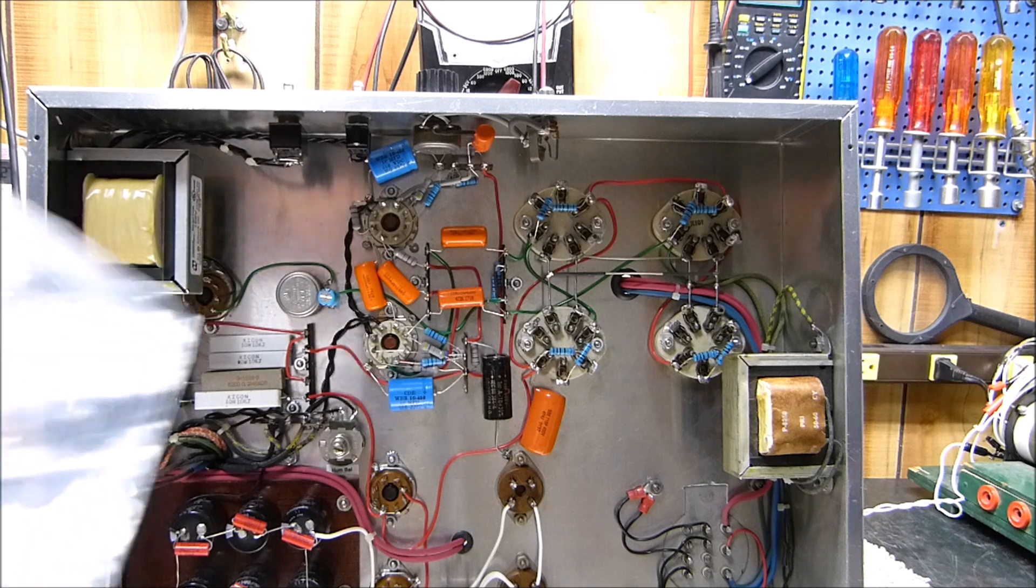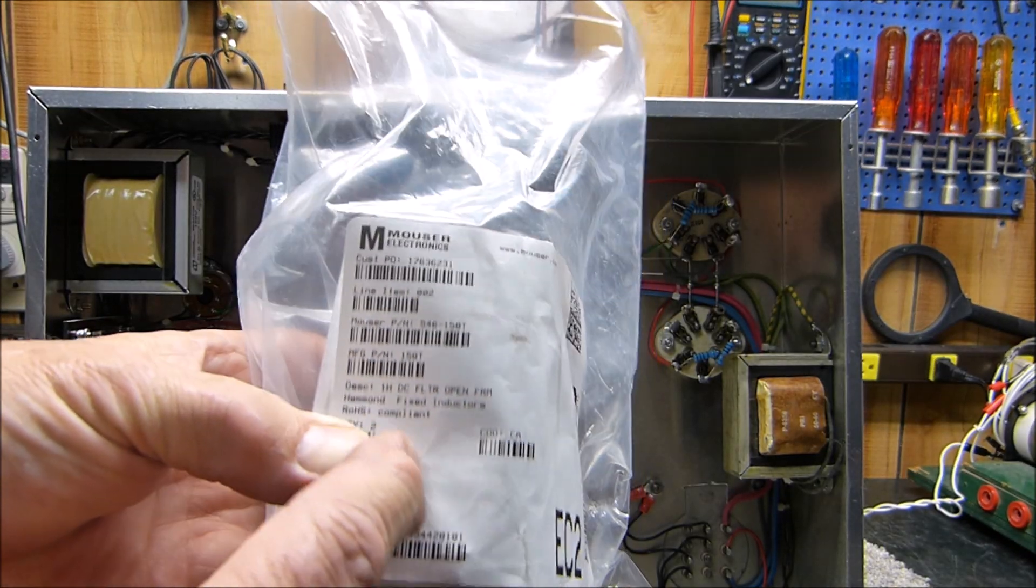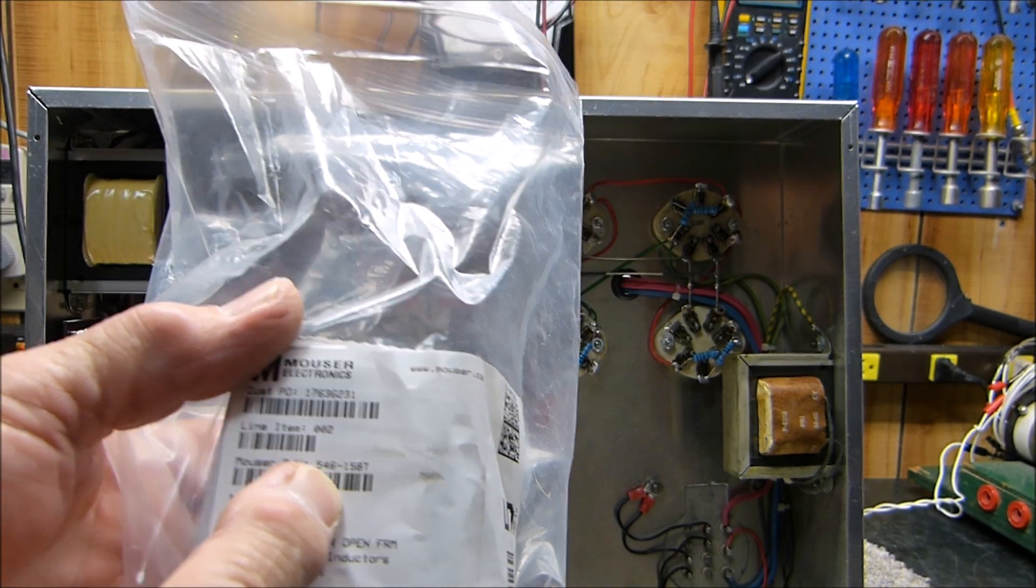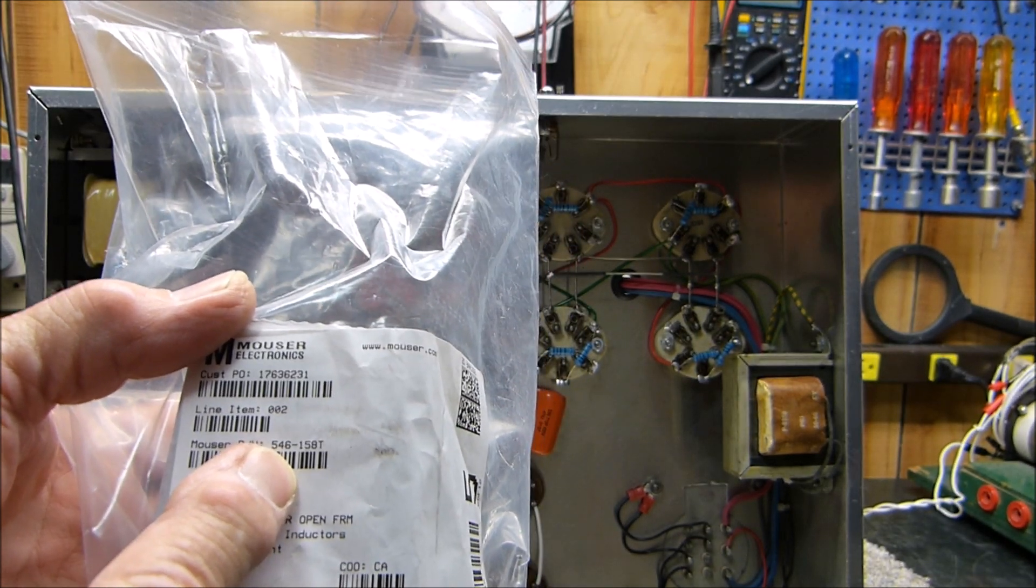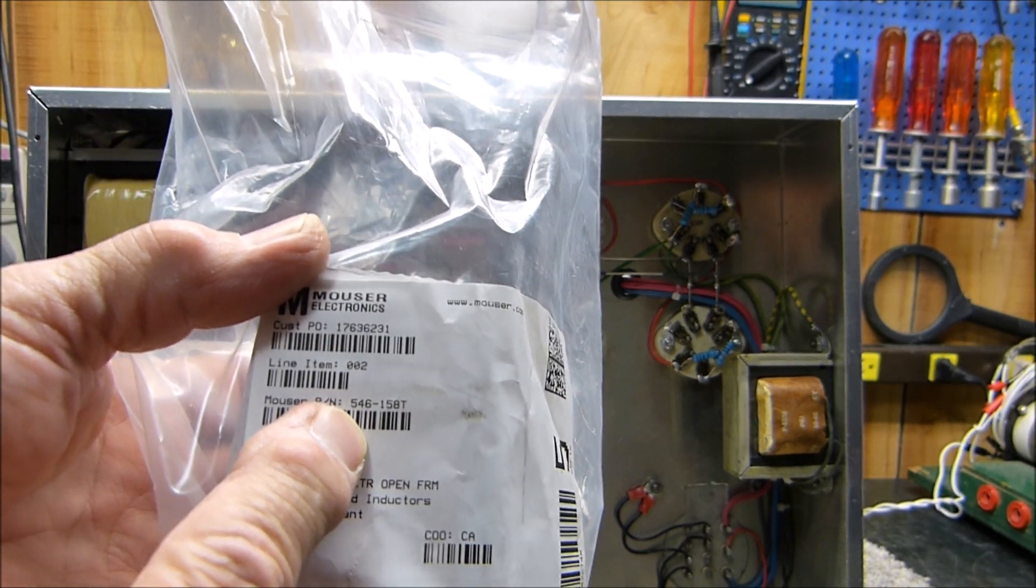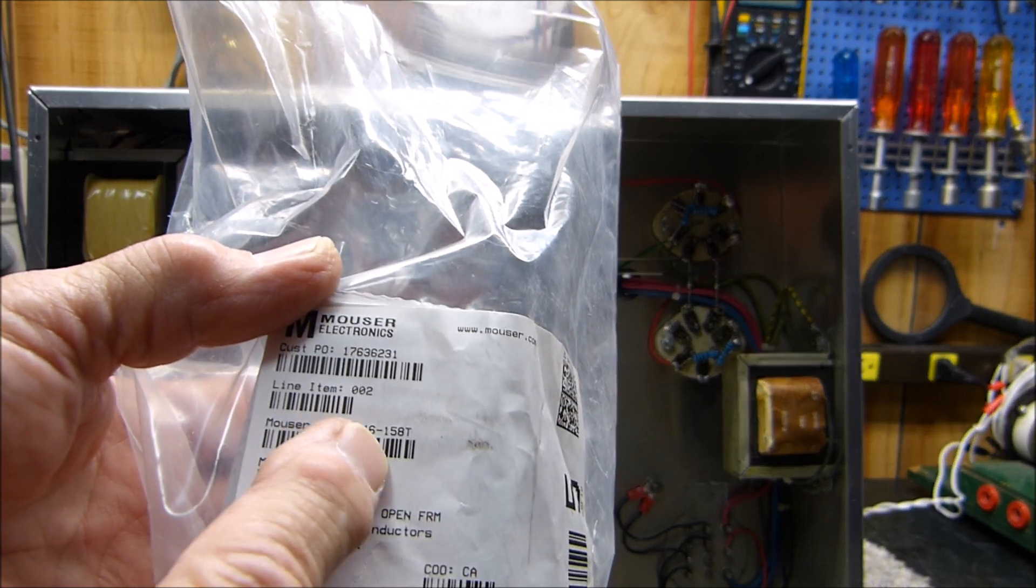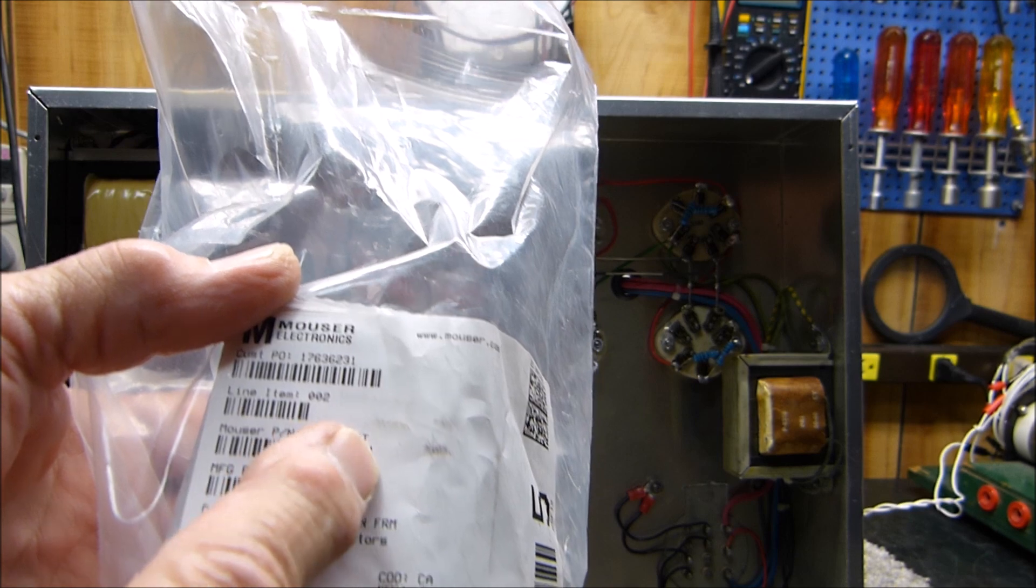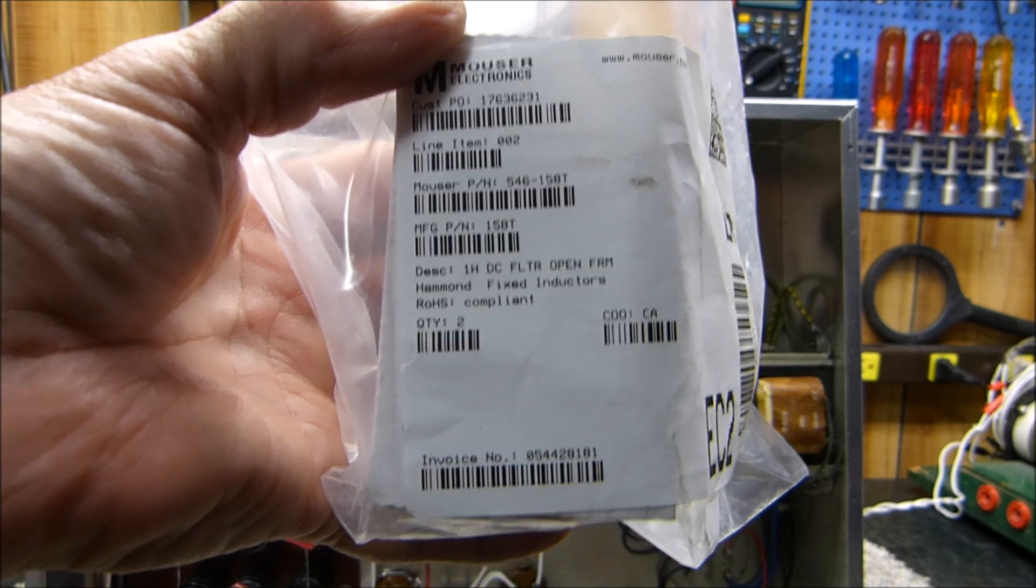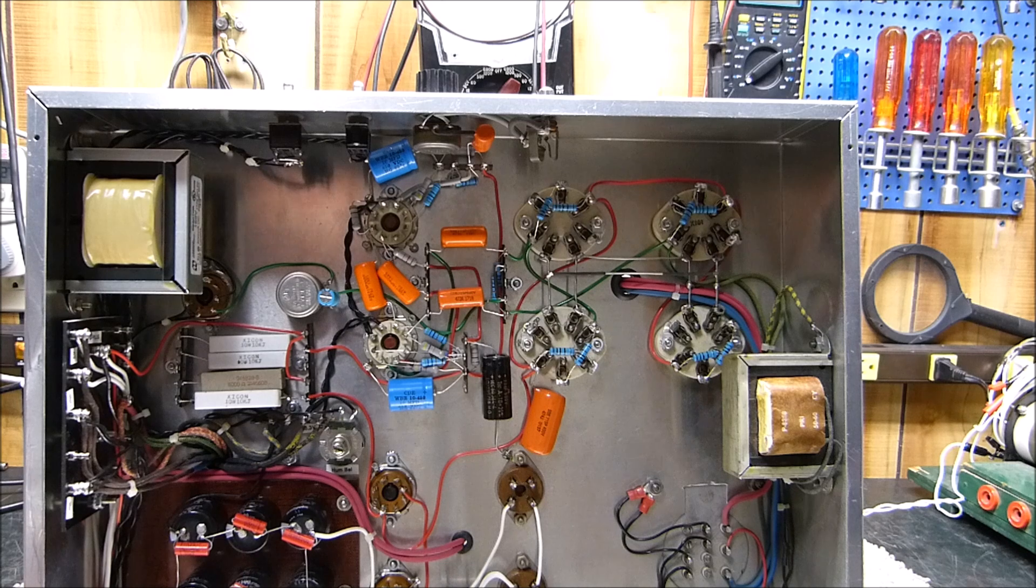Back to the chokes - here's the smaller of the chokes. This is a one henry 300 milliamp, and there's its part number. Reason I'm giving you these part numbers is these things are kind of hard to find. I love Mouser but finding things in there unless you call it what they call it can be pretty difficult. The part number here is 546-158T.